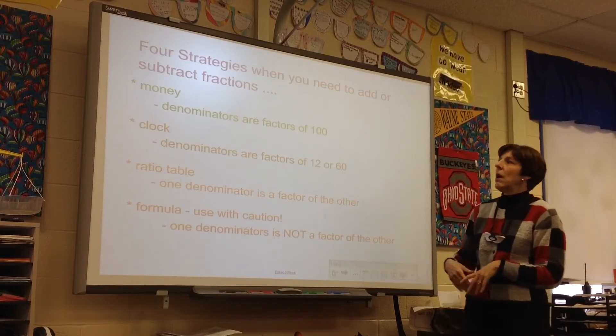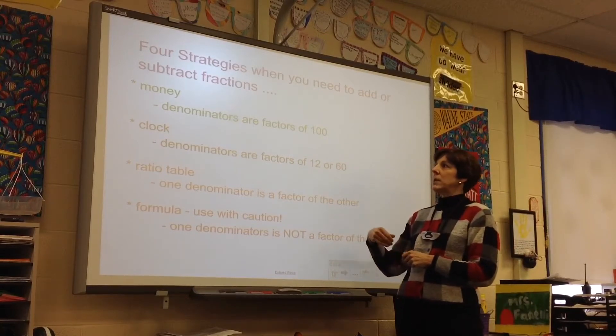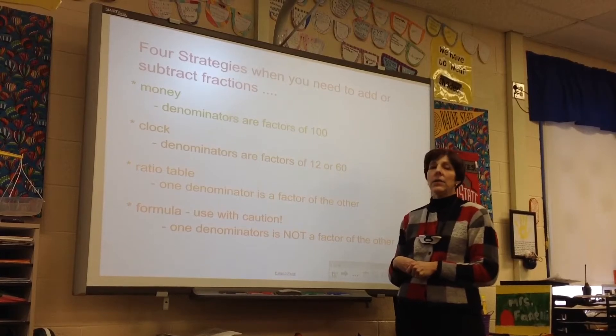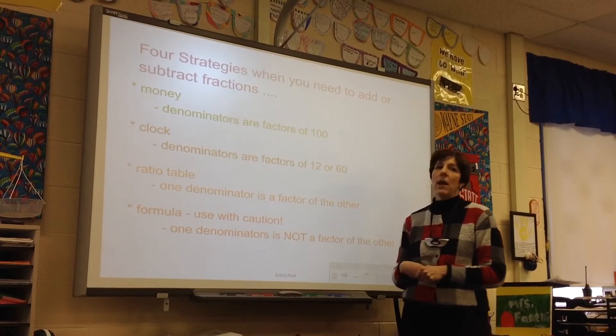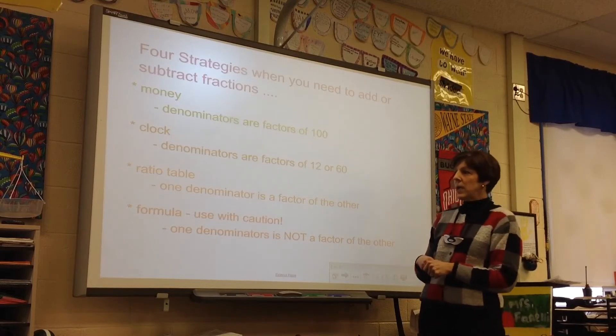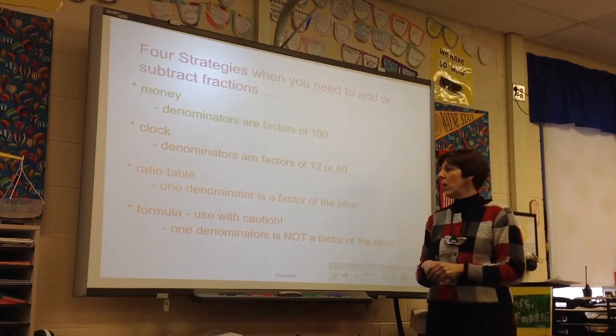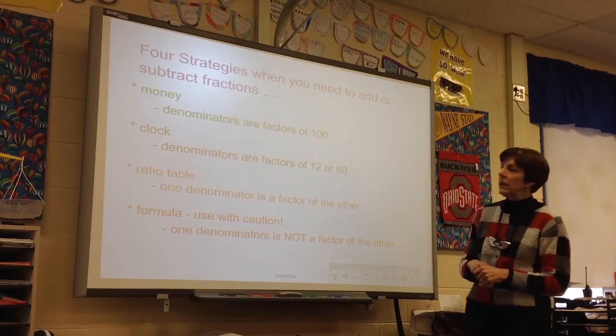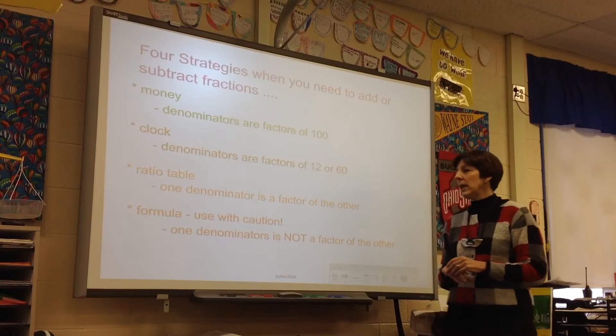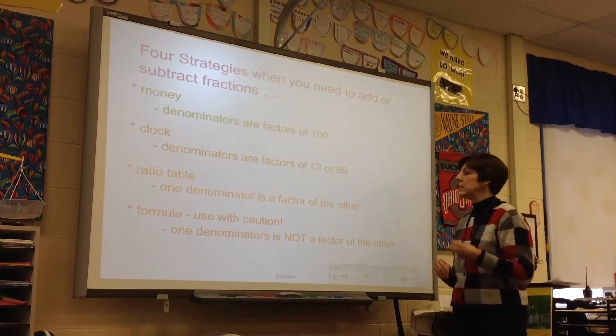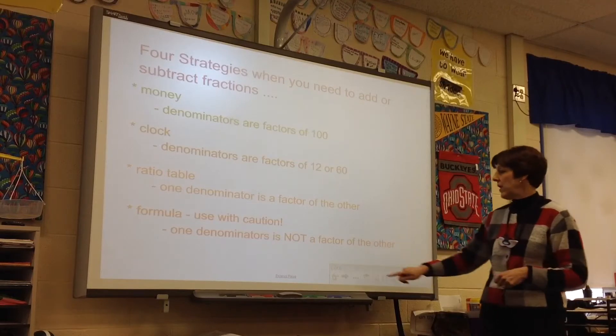First, the money strategy, when denominators are factors of 100. Secondly, the clock strategy, when denominators are factors of 12 or 60. The ratio table is the third strategy, when one denominator is a factor of the other. And finally, the formula. But use the formula with caution. That's for when one denominator is not a factor of the other.